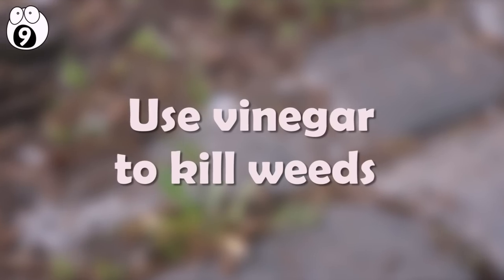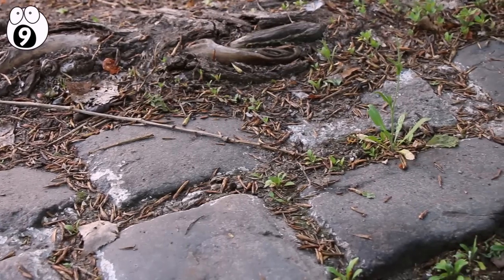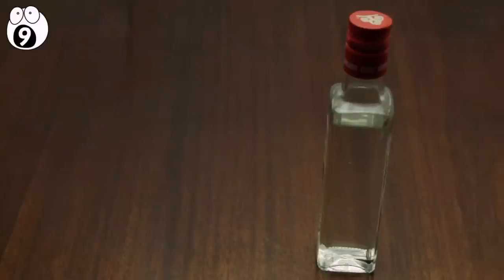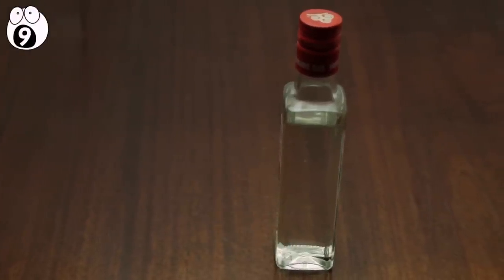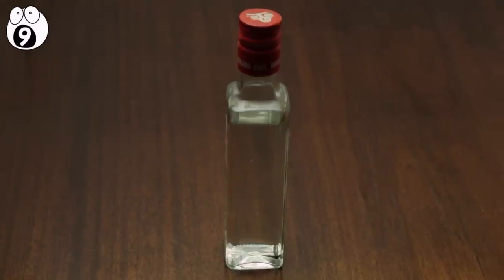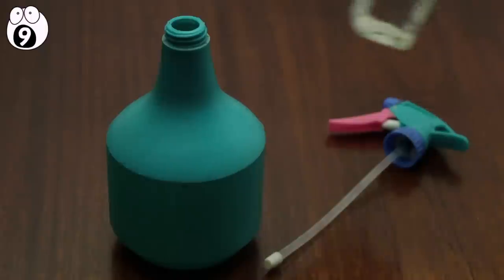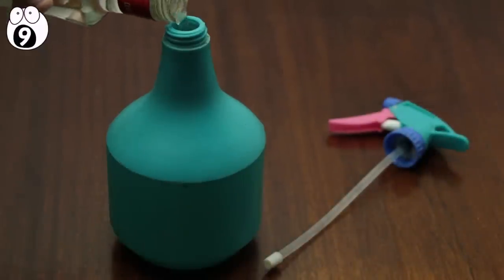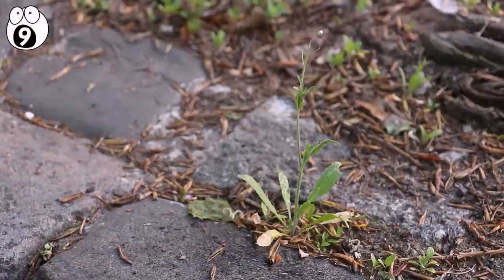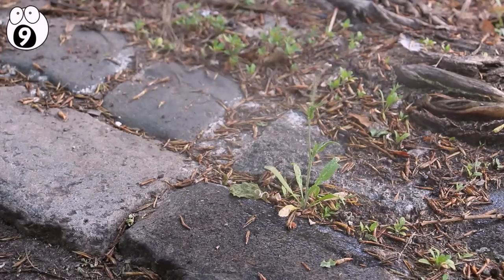Number 9. Use vinegar to kill weeds. If your garden is starting to be overcome by weeds, there is a simple solution hiding in your cupboard: vinegar. Vinegar contains acetic acid, which will kill any plant it touches by absorbing moisture from the leaves and shriveling the plant. Simply fill a spray bottle with the most highly acidic vinegar you can get your hands on, and spray it at the relevant plant. Be warned though, if the vinegar touches any grass or other plants, it will kill them too.